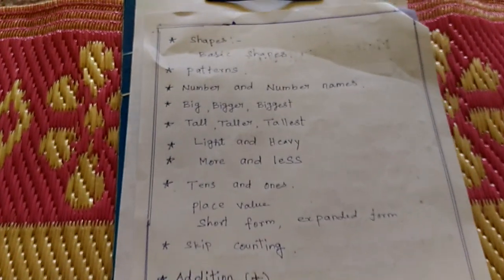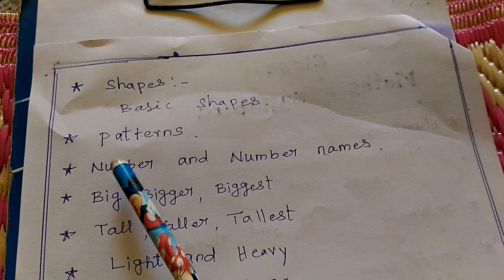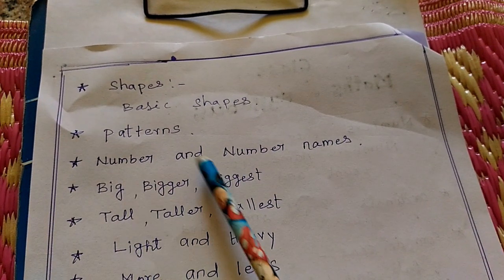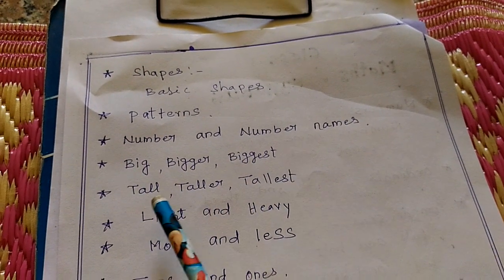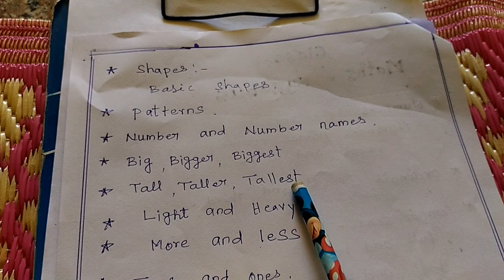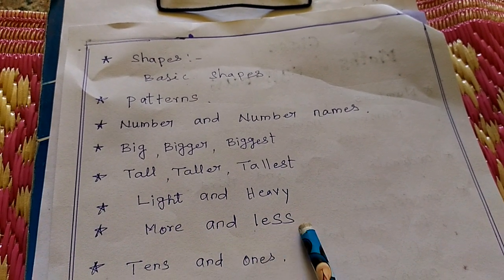Next. Shapes: basic shapes. Patterns. Number and number names. Big, bigger, biggest. Tall, taller, tallest. Light and heavy. More and less.